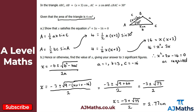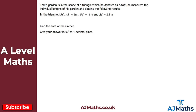For question two, Tom's garden is in the shape of triangle ABC. He measures: AB = 6 m, BC = 4 m, and AC = 2.5 m. We're asked to find the area of the garden. Starting with a quick diagram labelling A, B, and C with the given side lengths.